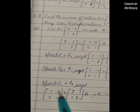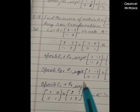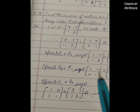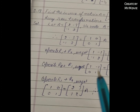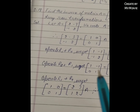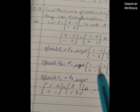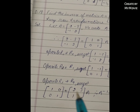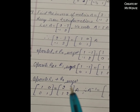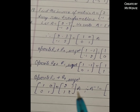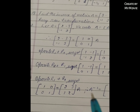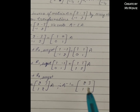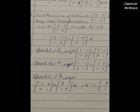Operating R1 + R2: R1 becomes [1 + 0, -1 + 1] = [1, 0], and the second row remains [0, 1]. The right-hand side gives [[2, 3], [1, 2]] times A. Therefore, A inverse is equal to [[2, 3], [1, 2]].